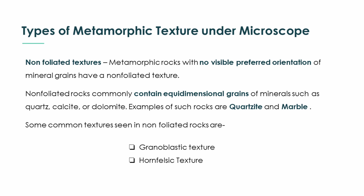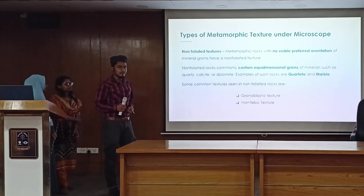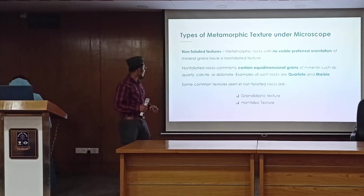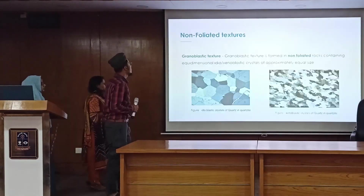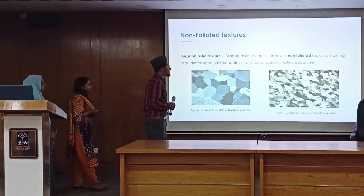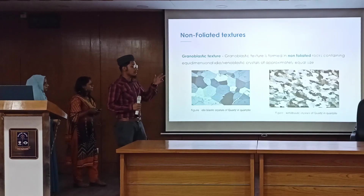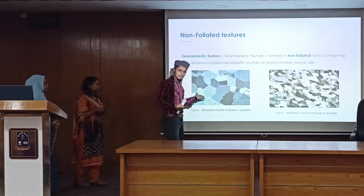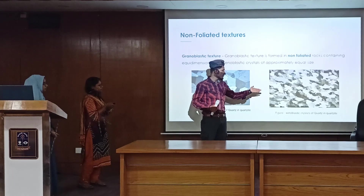Non-foliated rocks commonly contain equidimensional minerals such as quartz, calcite, and dolomite. An example is quartzite and marble. Some common textures seen in non-foliated rocks are granoblastic texture. They are usually formed in non-foliated rocks which contain equidimensional grains of approximately equal size, which are either idioblastic as shown in the left figure, or xenoblastic as indicated in the right figure.